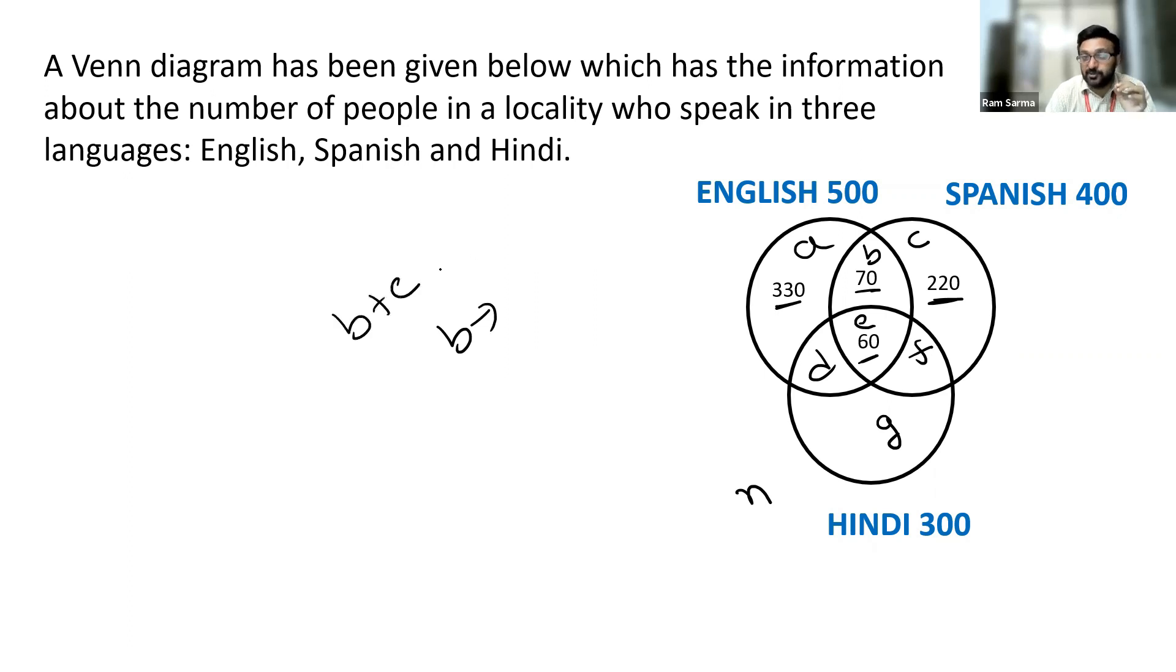Now, I want you to understand the difference between these two. English and Spanish is represented by B plus E. Now, B is only English and Spanish. In the previous case, if it's B plus E, English and Spanish, Hindi is also included into that.